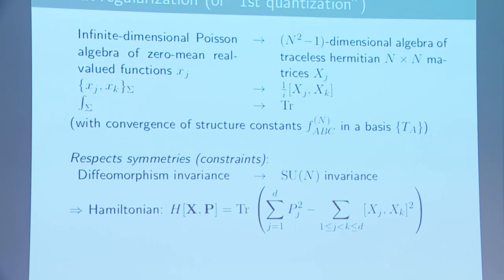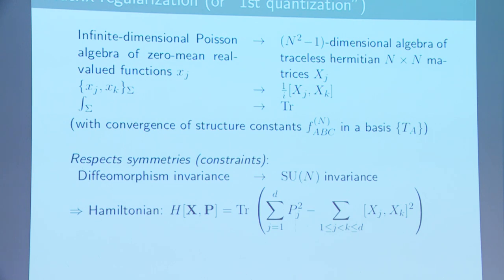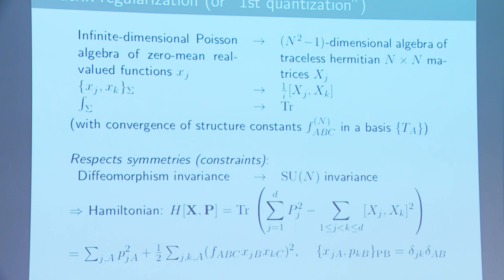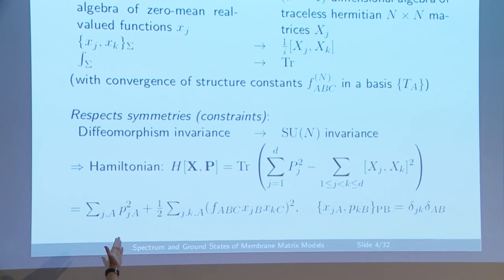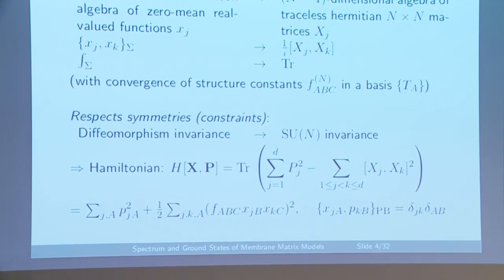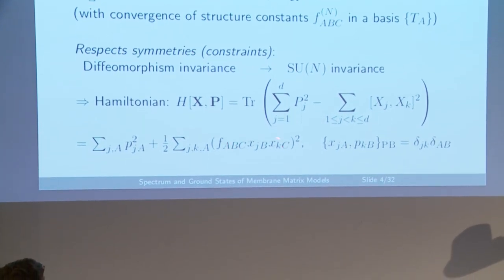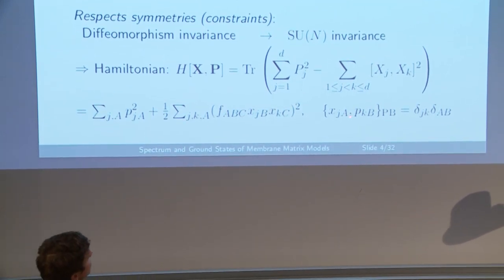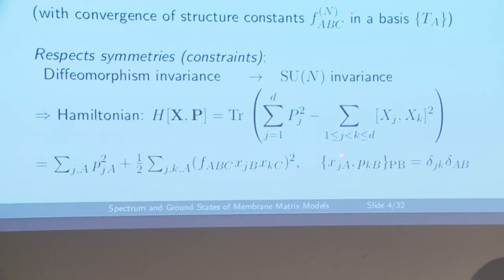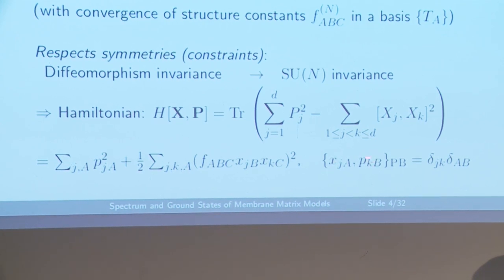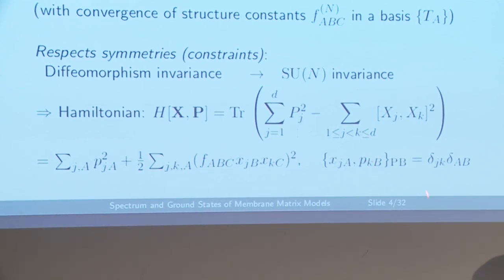We have the Hamiltonian, which is now a trace over the momentum side of the matrices squared, and then you have the commutator squared over all pairs of matrices. If you write this down in terms of a basis of SU(N), you have the sum of momenta squared and then the structure constants — that would be the commutator squared. We still have the canonical Poisson brackets between the coordinate and momentum variables, but now there are only finitely many of them. This finite-dimensional system can then be quantized in the standard way using Schrödinger quantization.